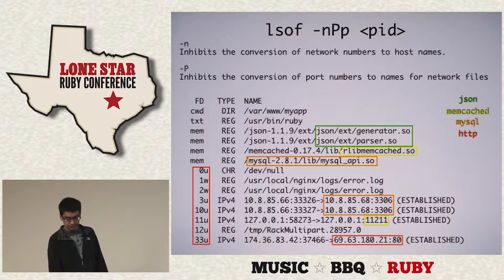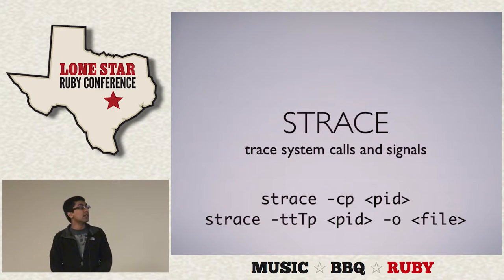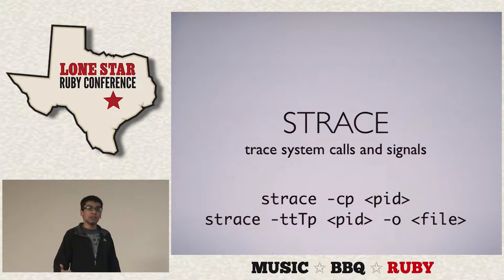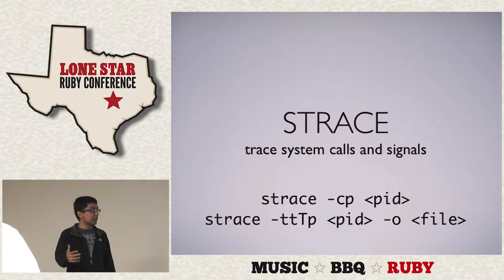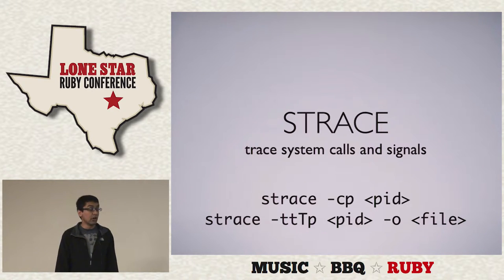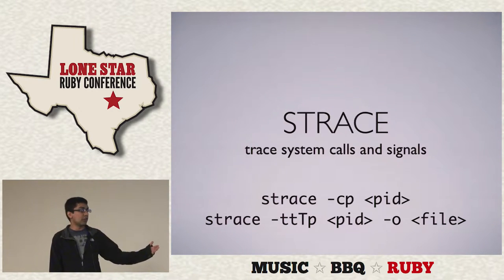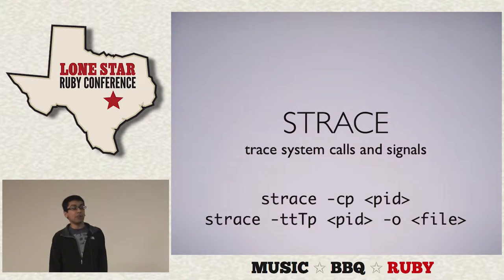lsof is really useful because you can run it against any process and get a sense of what it's doing. The next tool is strace. Strace is a Linux-only tool that traces system calls and signals. System calls are calls to functions defined in the kernel — when you make a system call, you switch from user space into kernel space. You can run strace against any running process by providing a PID, and it prints in real time all system calls as they happen.